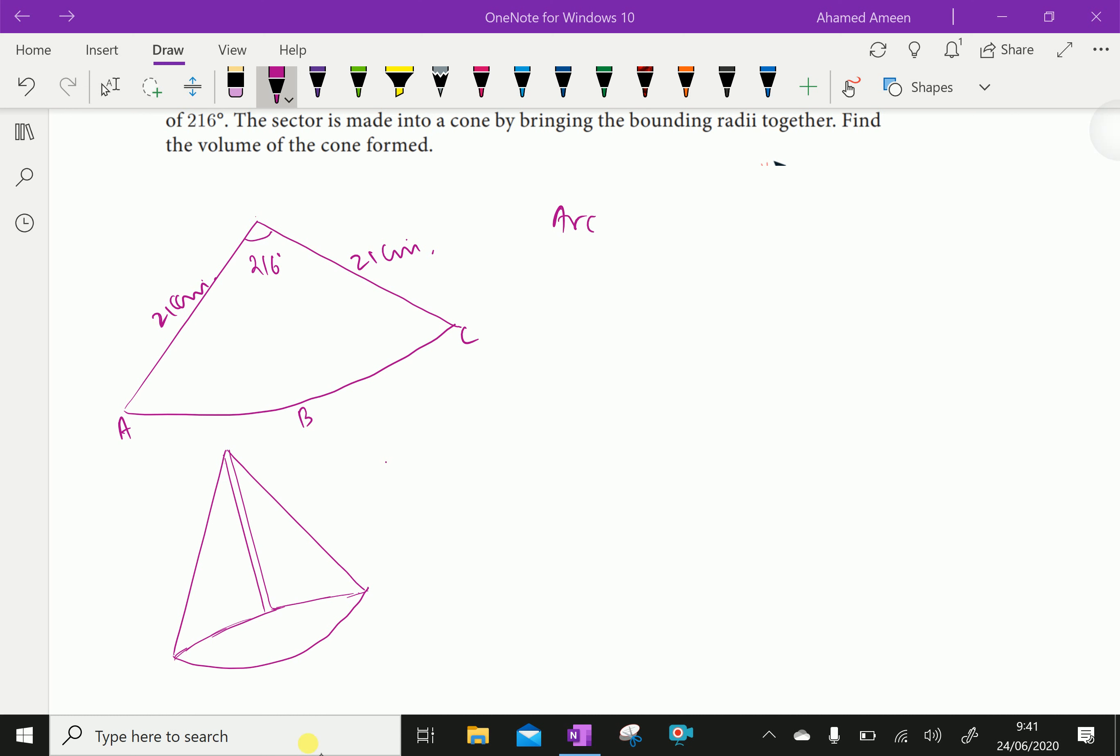Therefore, arc length ABC equal theta by 360 into 2 pi r, which is 216 by 360 into 2 into pi into r, radius is 21.